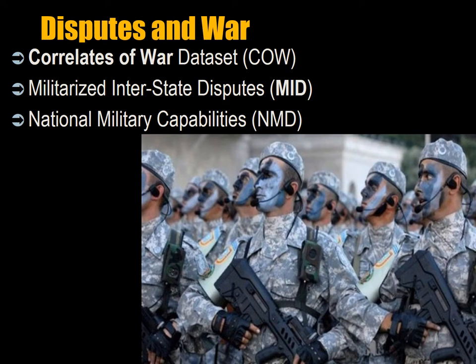The principal source of data for studying and testing hypotheses about the causes of war is the Correlates of War dataset, from the Correlates of War project. This was started at the University of Michigan by J. David Singer in the 1960s, when the university obtained a large computer that allowed rapid calculation of statistics. This dataset — the COW — has lots of different sub-datasets that are related.